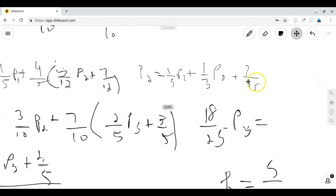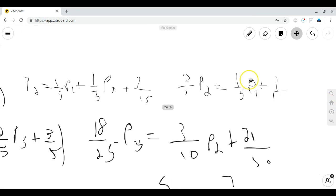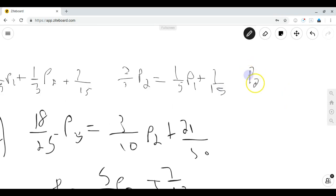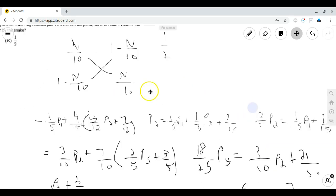Moving the p of 2s to one side as we did with p of 3 we see that 2 thirds p of 2 is equal to 1 fifth p of 1 plus 7 over 10. With this we can plug this back into p of 1.